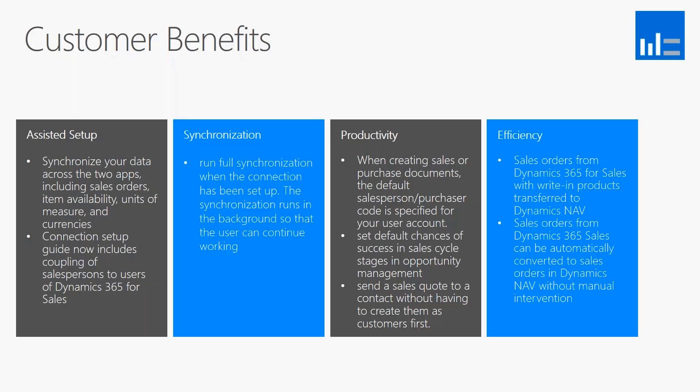From a productivity standpoint, they've done enhancements where creating a sales order or purchase order document automatically defaults things like your salesperson or purchaser from the account. It sets defaults for you for opportunities and updates sales stages. If you're familiar with Dynamics CRM, a lot of the sell process is defined by the customer, and here NAV can dynamically advance the sales stages.